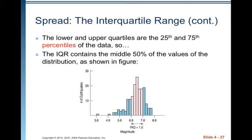The lower and upper quartiles are the 25th and 75th percentiles of the data. The IQR contains the middle 50% of the values of the distribution. For example, the middle 50% of earthquake magnitudes are between 6.6 and 7.6, so the interquartile range there is 1.